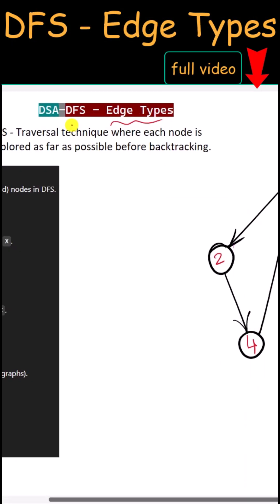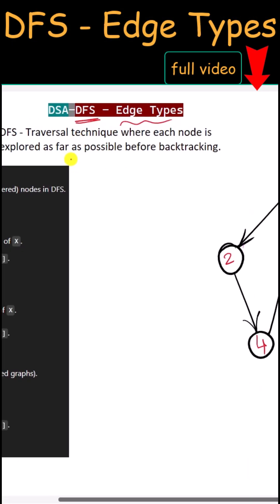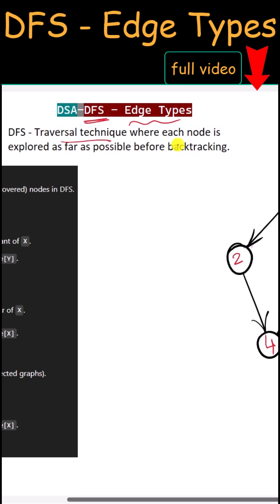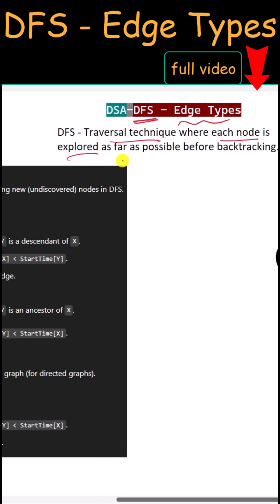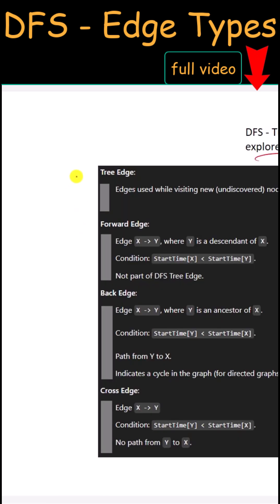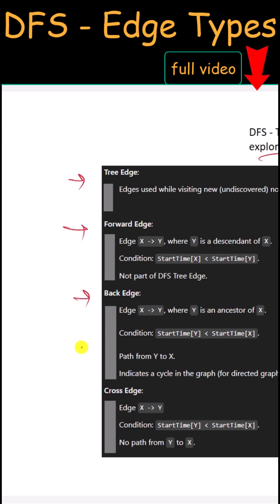Let's talk about the edge types in depth first search. As we know, this is one traversal technique. Here each node is explored as far as possible before backtracking. In DFS we have four types of edges.